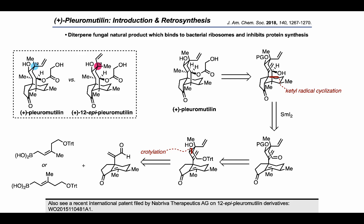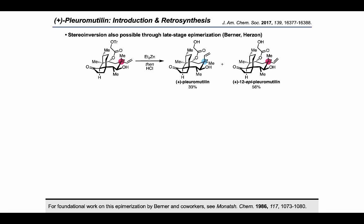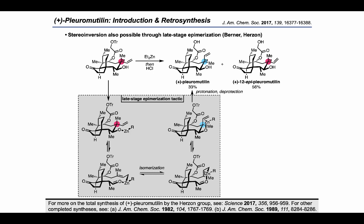I want to mention that there's been other important work on the synthesis of plurimutalin and its derivatives by the Herzon Group, who previously addressed the question of how to invert the stereochemistry at C12 using chemistry pioneered by Berner. The Herzon Group treated a starting material with diethylzinc and found that it was possible to invert the stereochemistry at C12 to a modest degree. This was proposed to occur by forming a zinc alkoxide, which can undergo a retroallylation to form a ring-open intermediate that can isomerize and re-close to reverse the stereochemistry at C12. Using this strategy, the Herzon Group was able to access plurimutalin using a 12-epi plurimutalin skeleton.